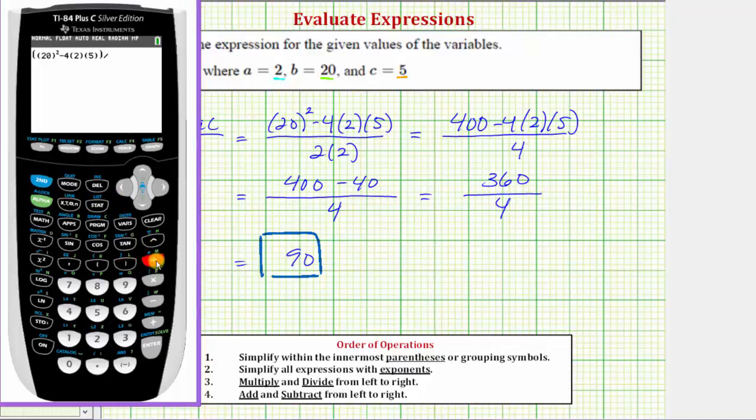Divided by open parenthesis for the denominator. And then we have 2 times 2. Another closed parenthesis to end the denominator. And enter. Notice how this does verify our work is correct.